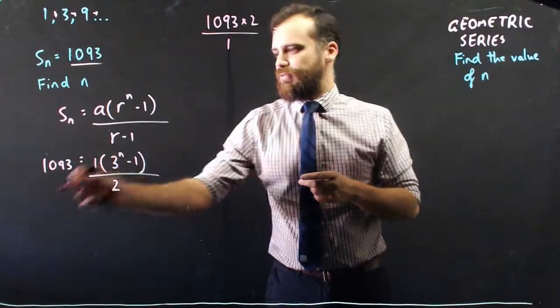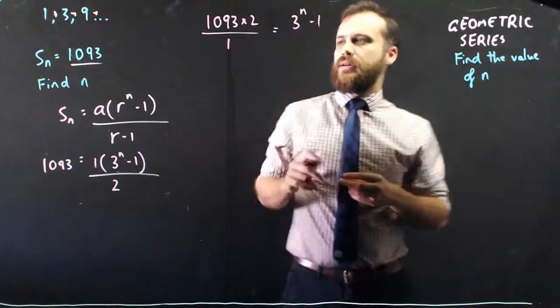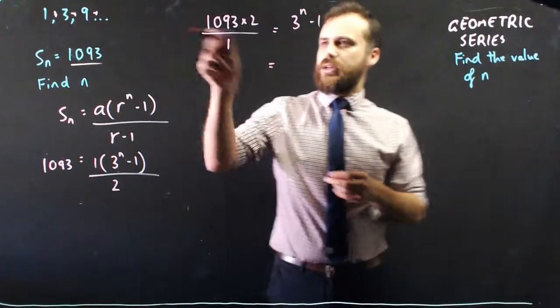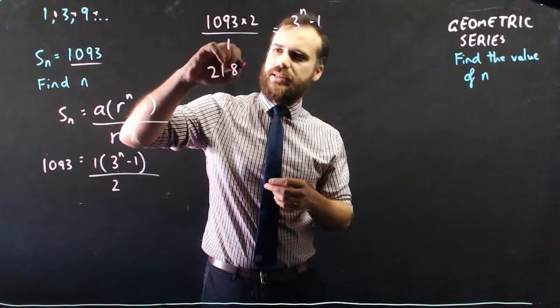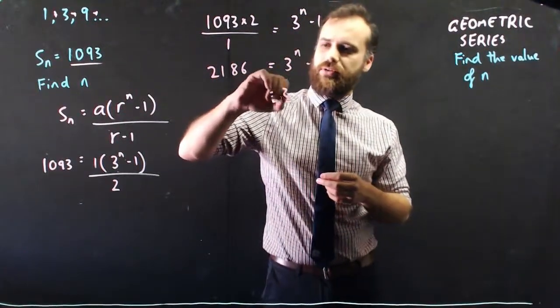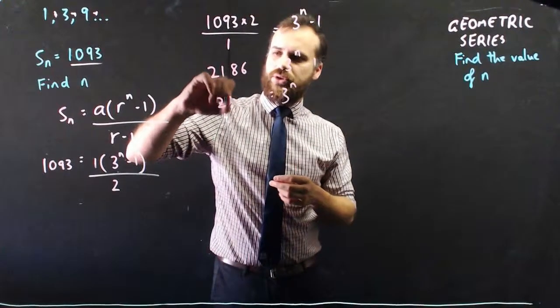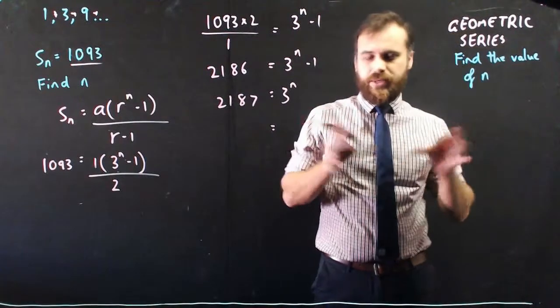So I'm multiplying by 2, I'm dividing by 1, not that that changes anything, and I get 1,093 times 2 over 1. So that's 2,186 equals 3 to the n minus 1. So 3 to the n equals 2,187.